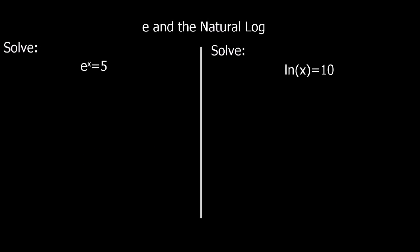Now we're going to look at solving equations with e and ln. When solving equations, we use e and ln as the inverses of each other. For example, e^x = 5: to solve this, we apply ln to both sides. So ln(e^x) = ln 5, and then ln and e cancel out, leaving us with x = ln 5.